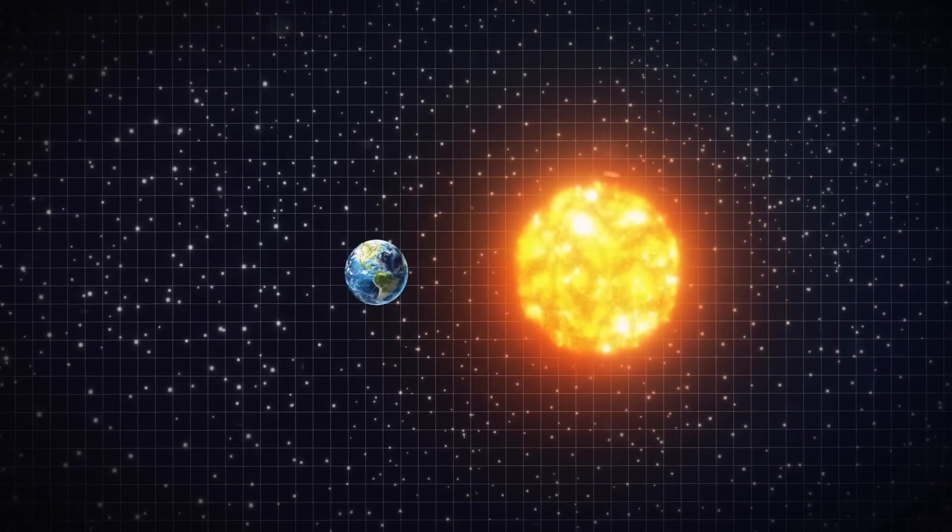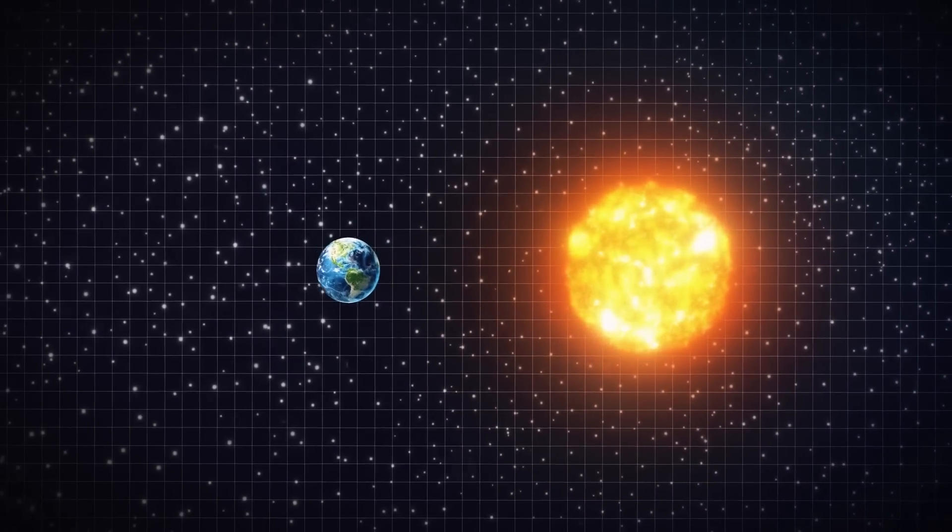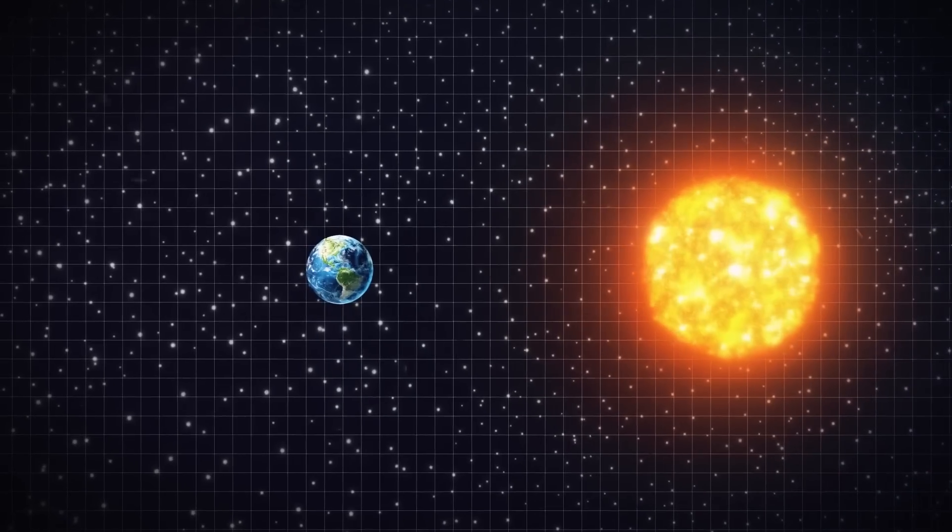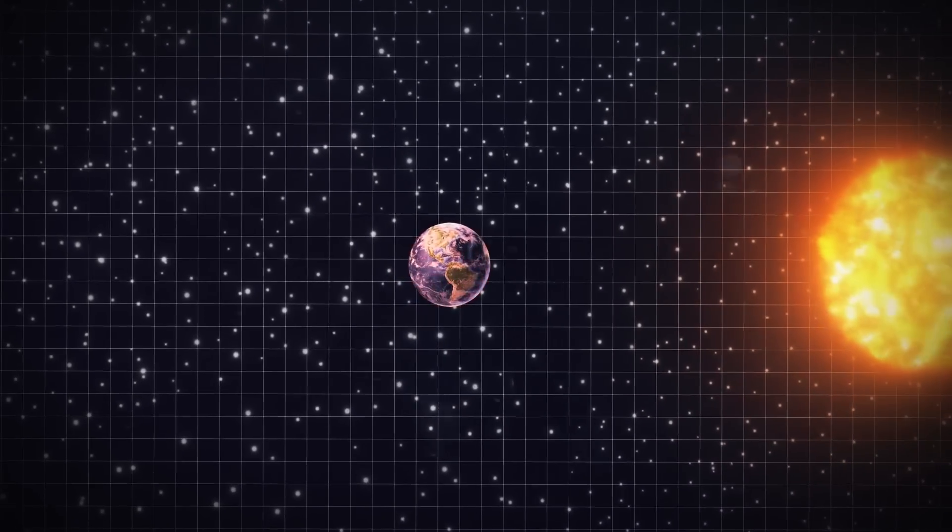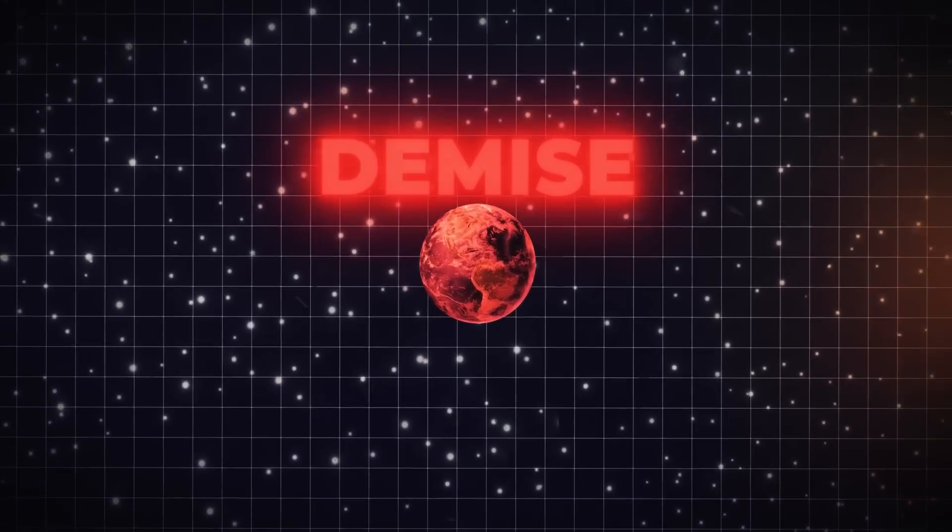Alternatively, it's possible that the Earth may recede from the Sun as it loses mass. But in any case, Earth would be reduced to a lifeless shell. That will be Earth's demise.